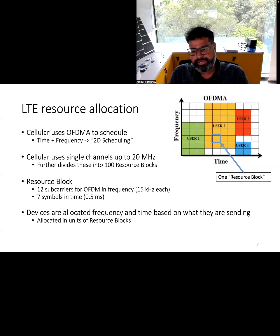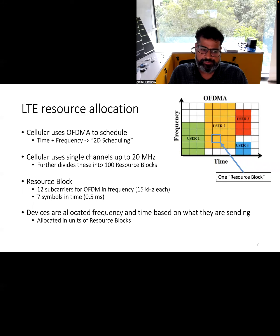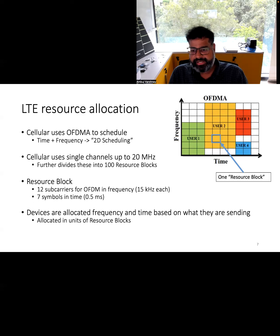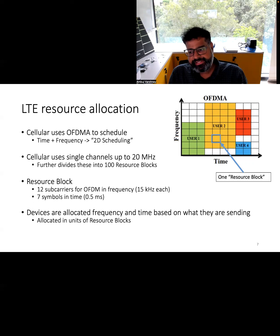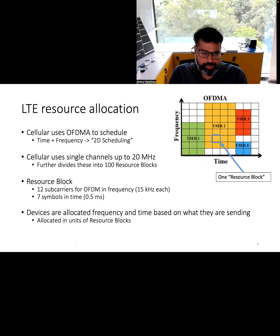Cellular networks use OFDMA to schedule various transmissions, where frequency and time are divided into many sub-blocks called resource blocks. The number of resource blocks allocated to a particular device controls its bandwidth usage and spectrum allocation, so different devices can have very different amounts of spectrum based on their traffic patterns. For example, if you have a multimedia-rich IoT application collecting vision or camera data, you would want to use more resource blocks because it is bandwidth-intensive.